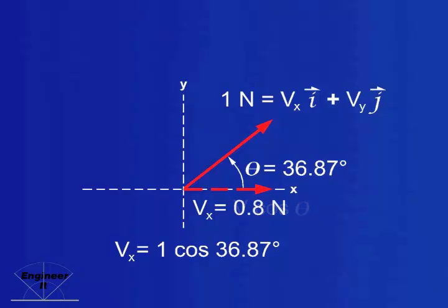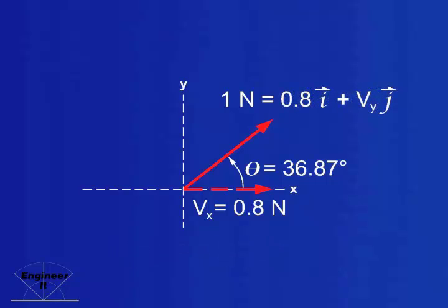That equals 0.8 newtons. In component form, we can say a 1 newton vector has a vector component equal to 0.8 times the unit vector i.